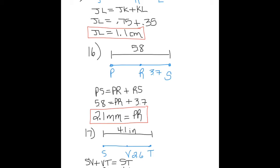Number 16: I'm looking for the measurement of PR. I know that PS equals PR plus RS. 5.8 equals PR plus 3.7. Subtract 3.7 from both sides and I find out that PR equals 2.1 millimeters.